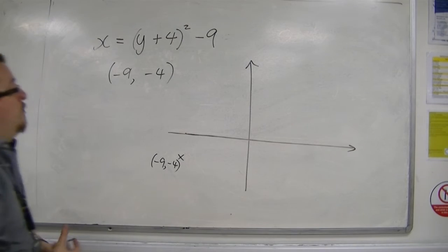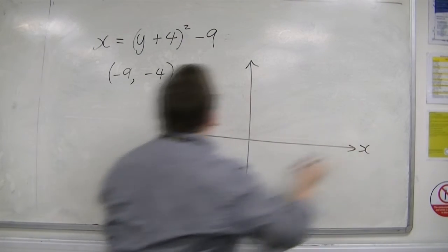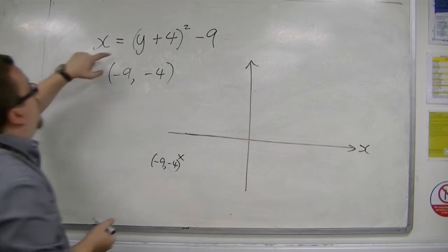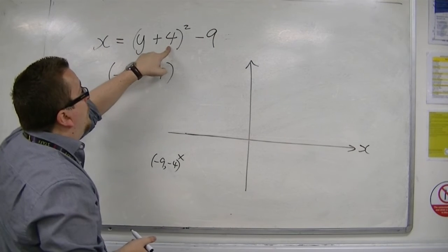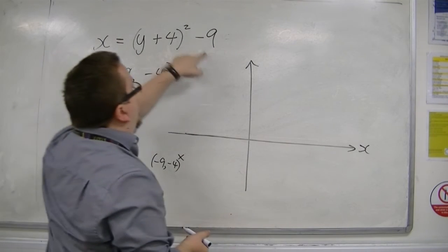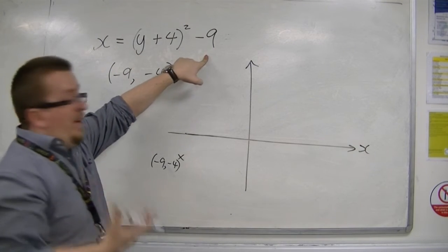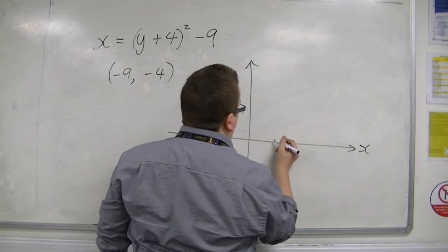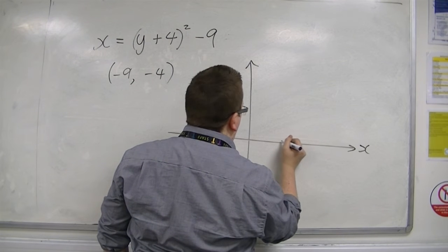I can also find out where it's crossing the x-axis. That's when y is 0. When y is 0, I get 4 squared take away 9, so that's 7. So it's crossing the x-axis at 7 — somewhere up here.